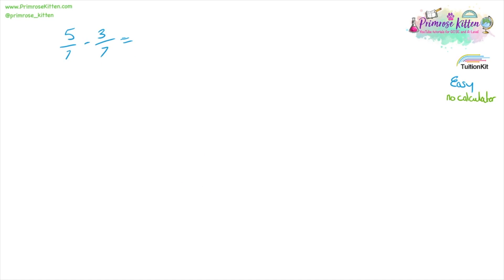Starting off with five over seven minus three over seven. Because they have the same number on the bottom, we can rewrite this as five minus three over seven. Five minus three is two, giving us two over seven.